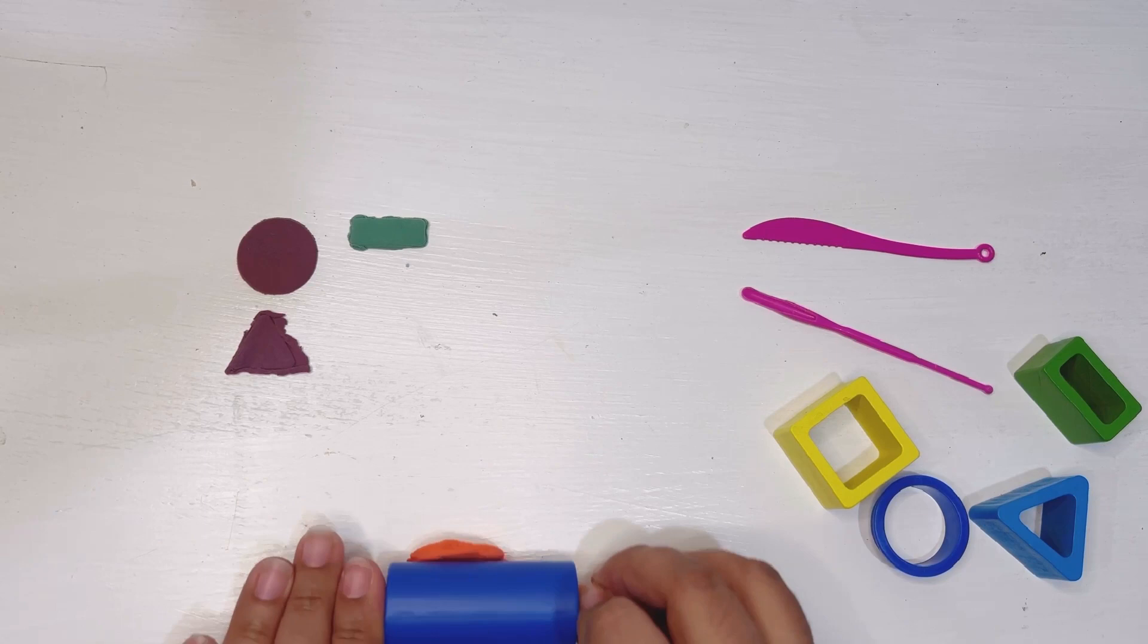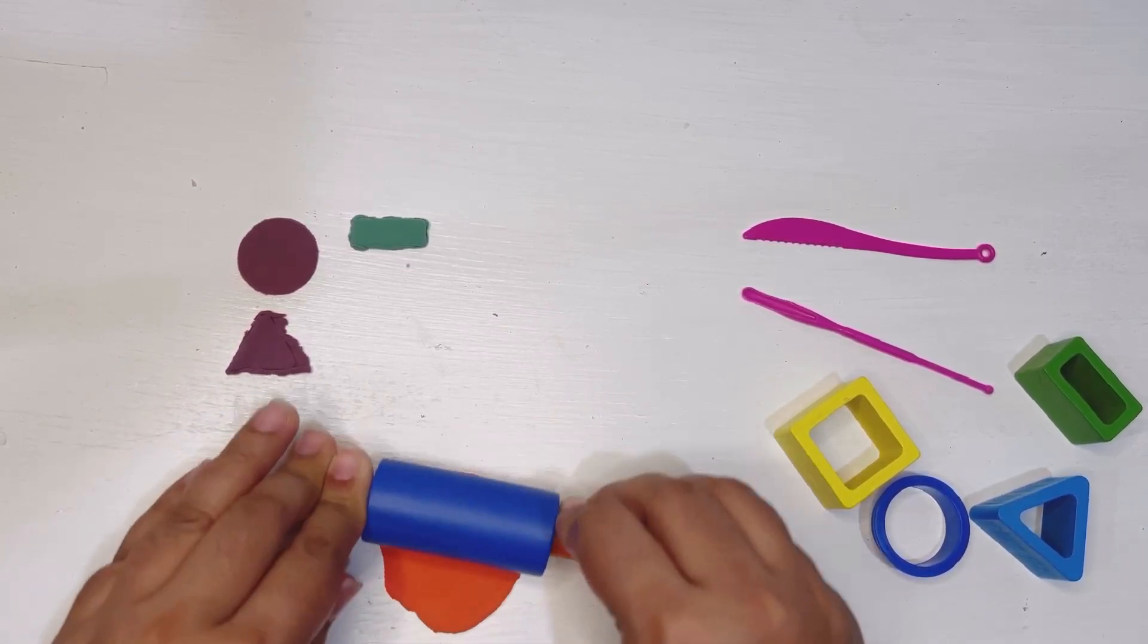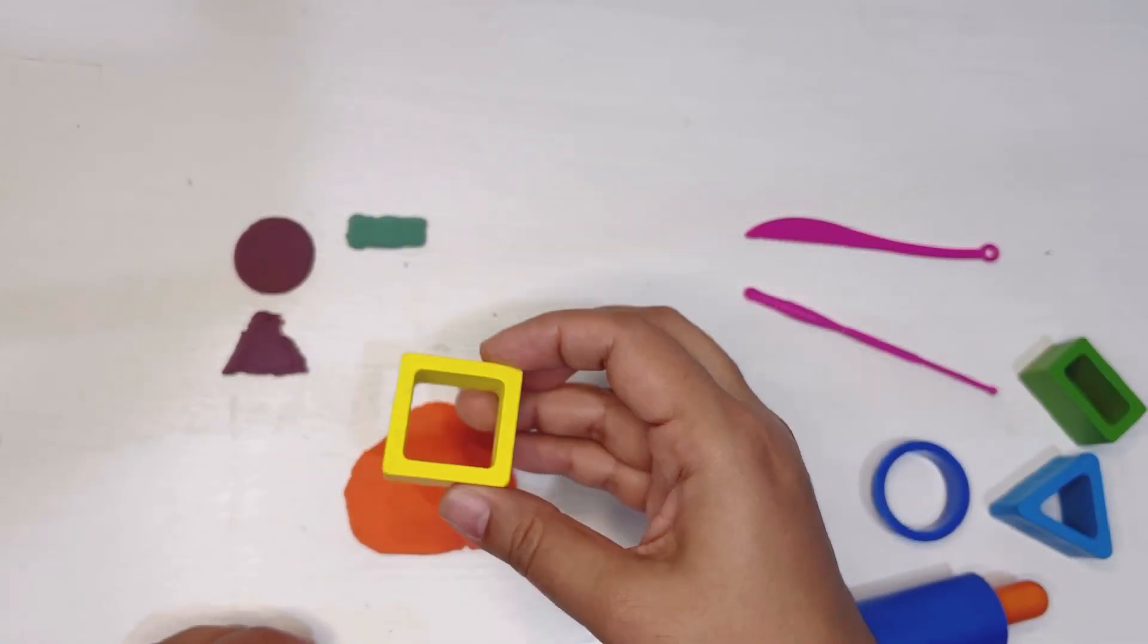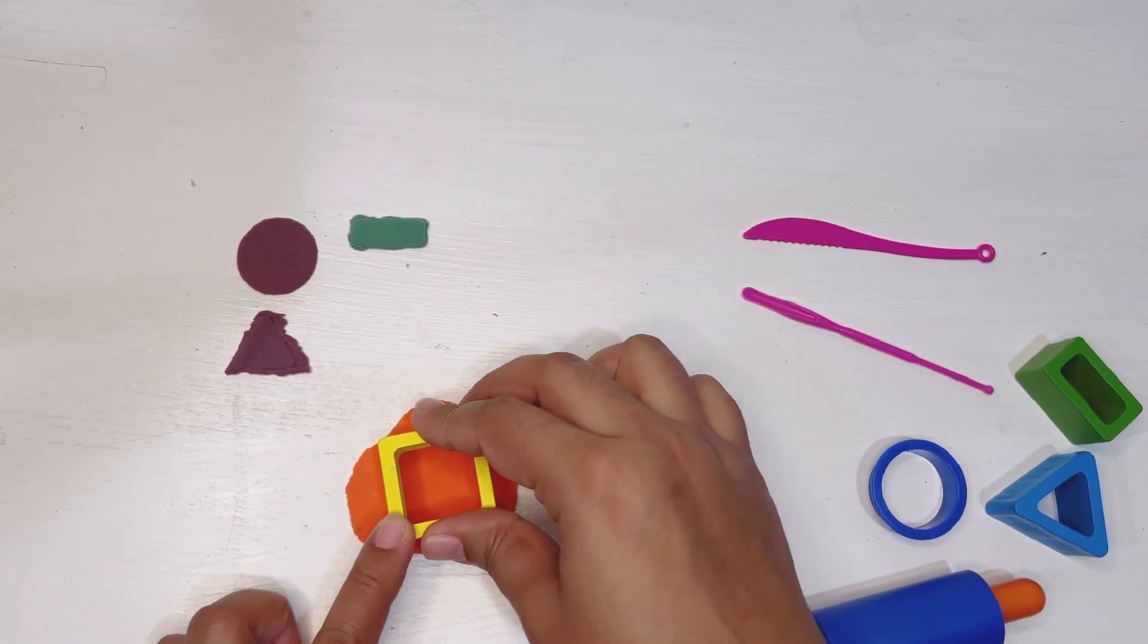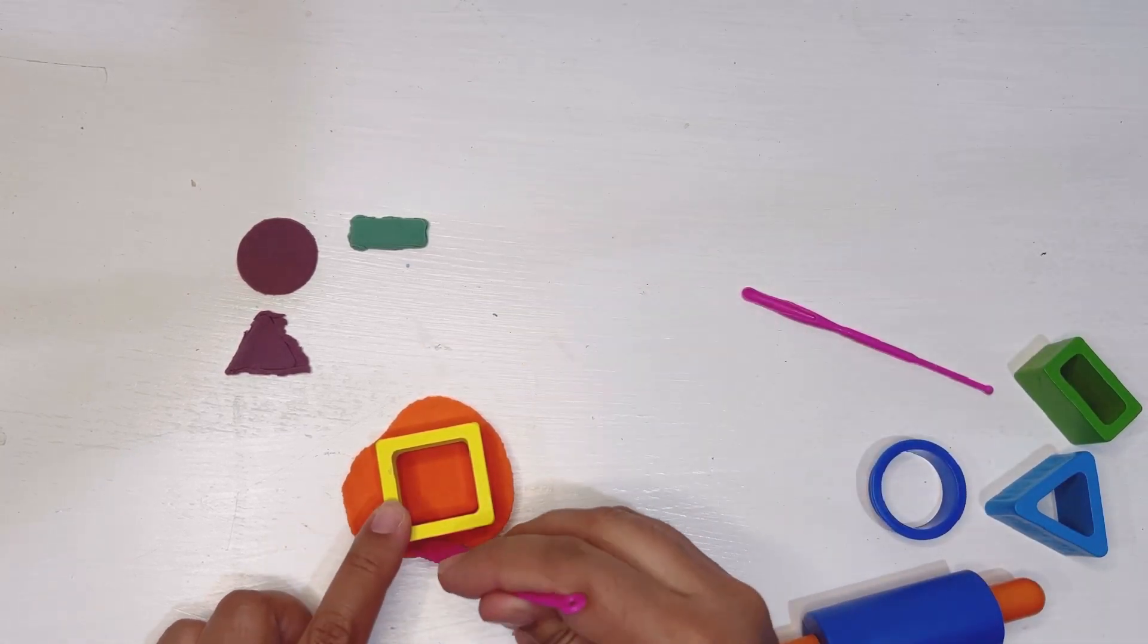Let's do our next play-doh. This is orange play-doh, first we'll make it flat with the rolling pin. Here you go, now let's make a square with orange play-doh. Press it tight. Now let's put the extra play-doh on the side.